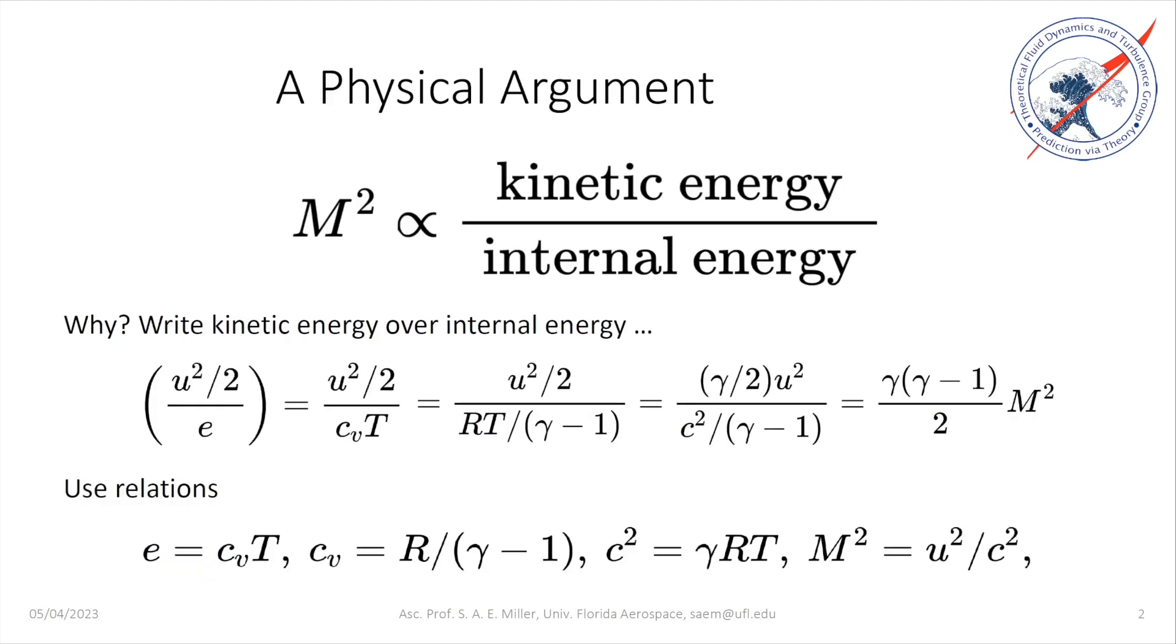A lesser known way to think of Mach number, though it is more physically intuitive for some, is to think of it as a ratio of the kinetic energy divided by the internal energy in spacetime at a point in the fluid and take its root. So we might say that the Mach number squared goes as the kinetic energy at a point divided by the internal energy of a point.